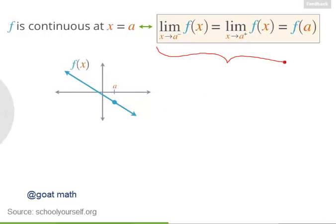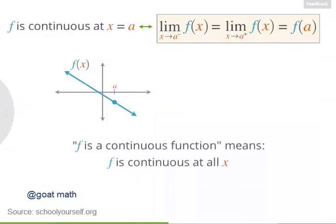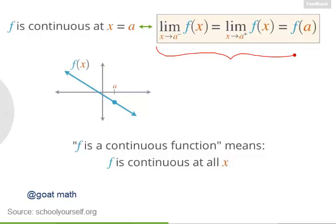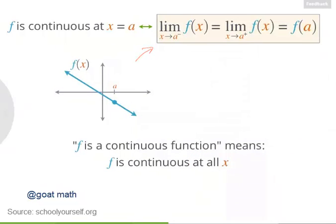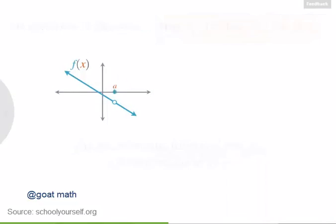So wherever these equalities are true for a function, that function is said to be continuous. And if we ever say a function is continuous without specifying where it's continuous, we're usually saying the function is continuous everywhere, so that these equalities are true at all x coordinates — that is, for all values of a in these equations. Now that we have a precise definition for continuity, let's look at a few different types of discontinuities.